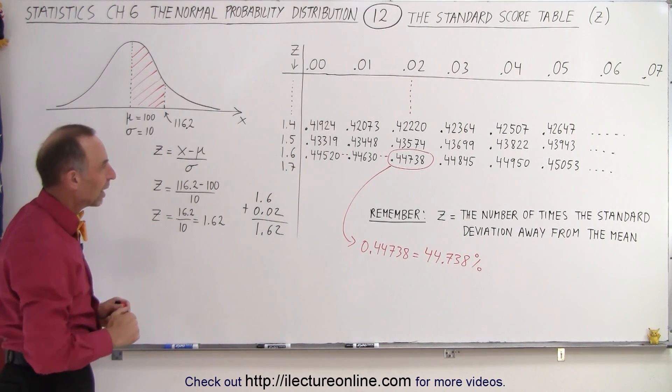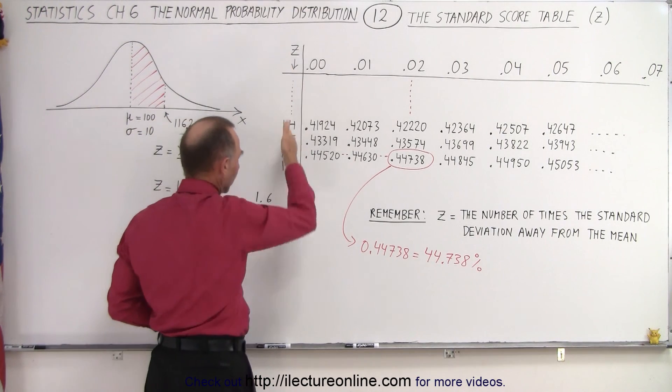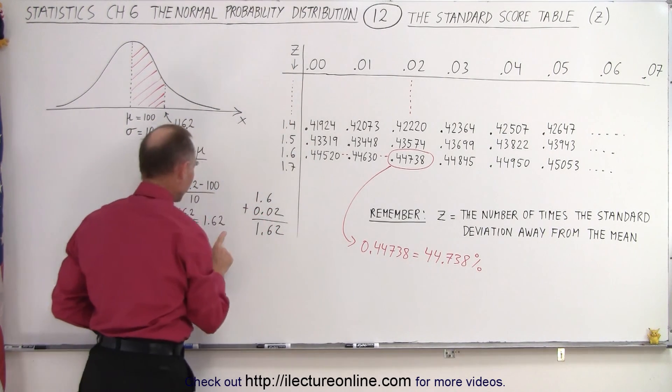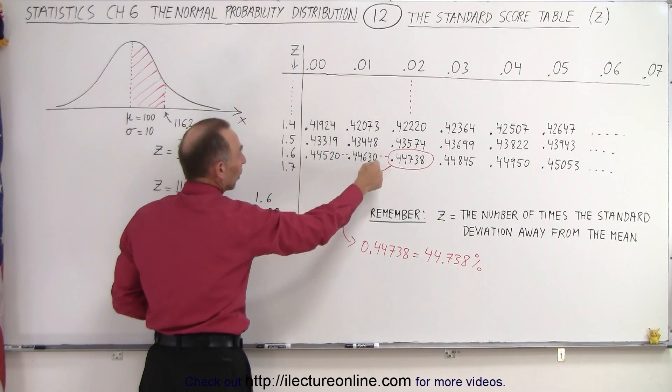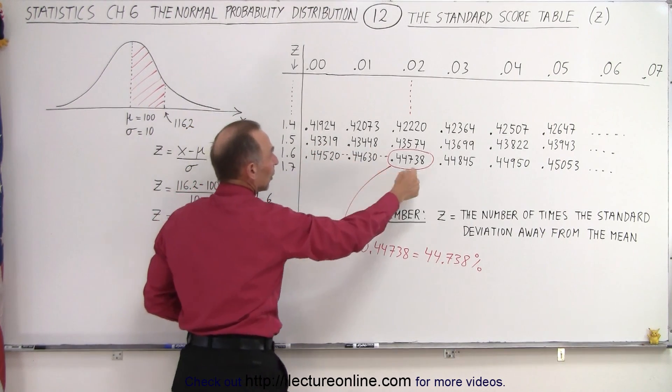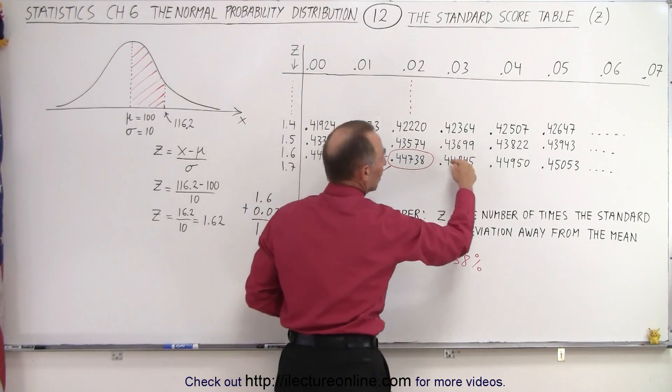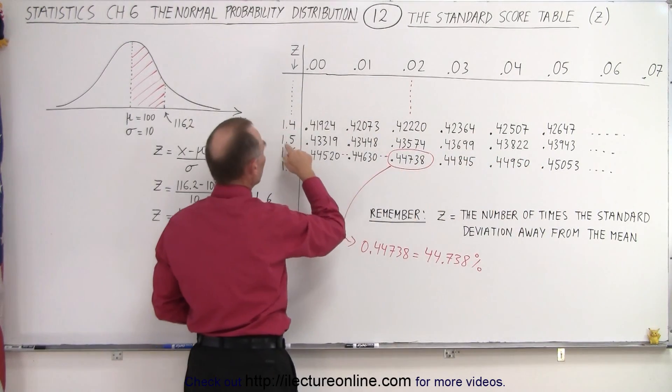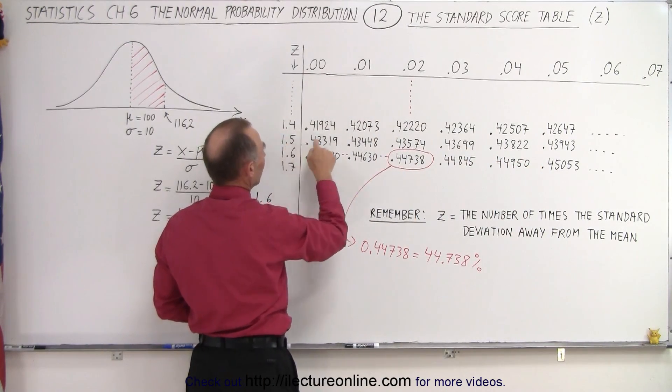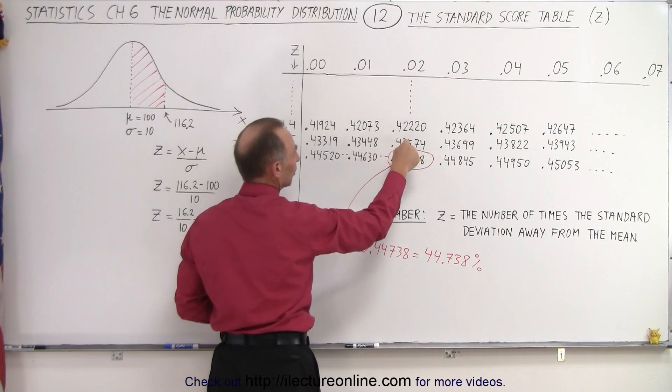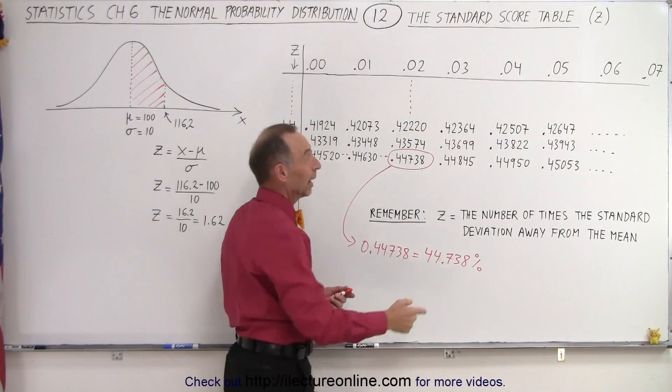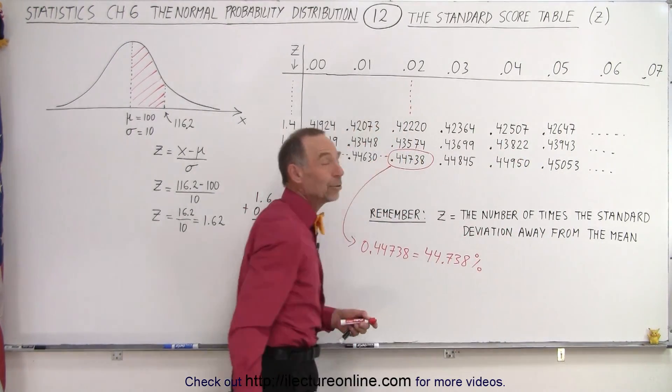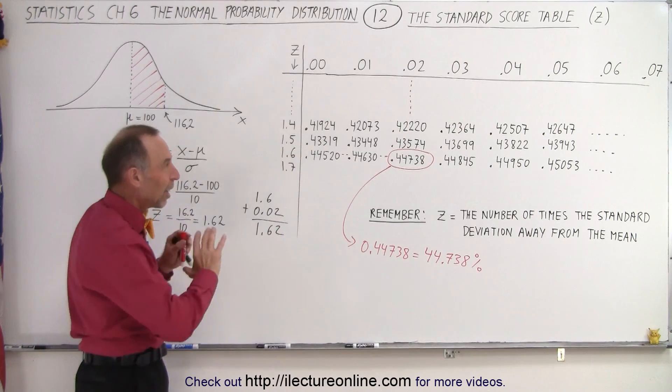And that is how we use the table. We simply come here and look at the vertical number to find the first two digits of the Z. If it was 1.6, of course we simply take this number. 1.61 we take that number. 1.62, 1.63, 1.64. If it had been 1.54, that would be 1.50, 1.51, 1.52, 1.53, 1.54. And we would have taken that number right there and it would have been 43.822%. So that's how we utilize the table.